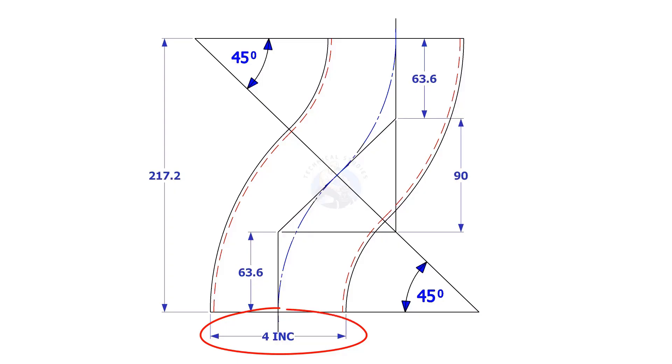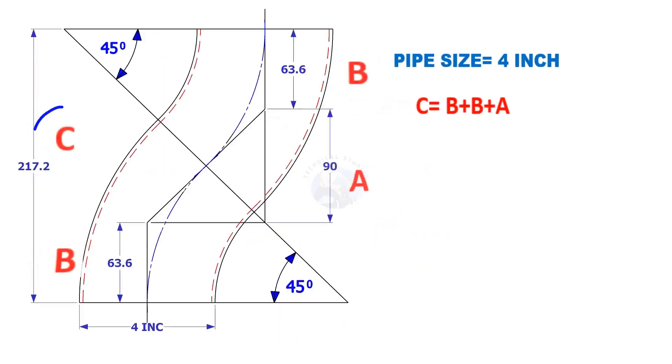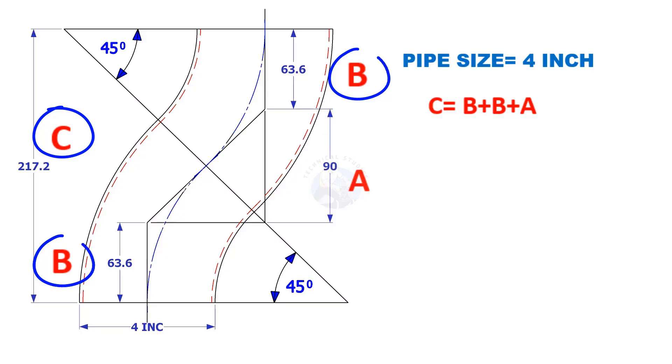Assume that the elbow diameter is 4 inches. We have to calculate the elbow center of a 45-degree elbow. The height C is equal to B plus B plus A.